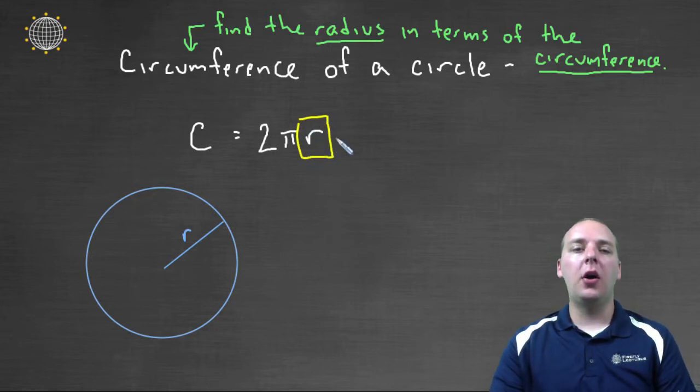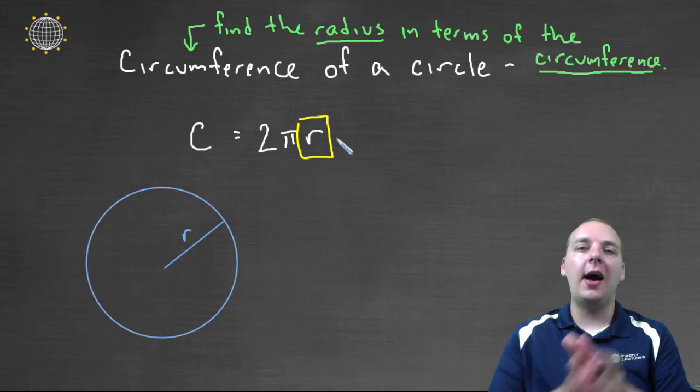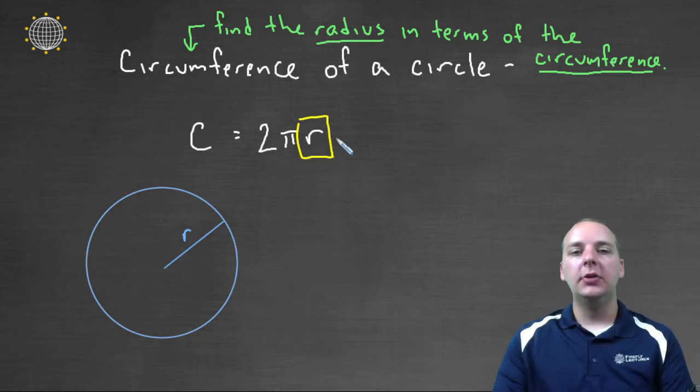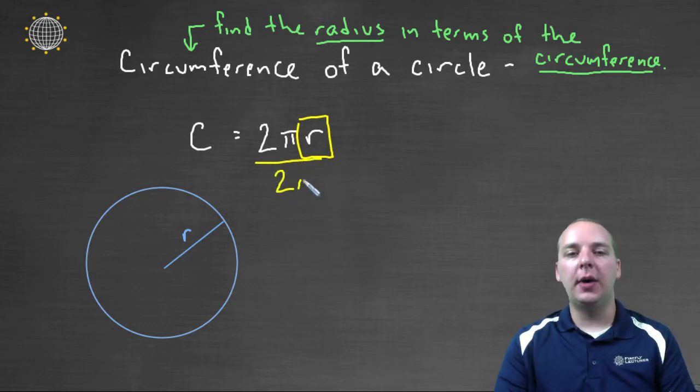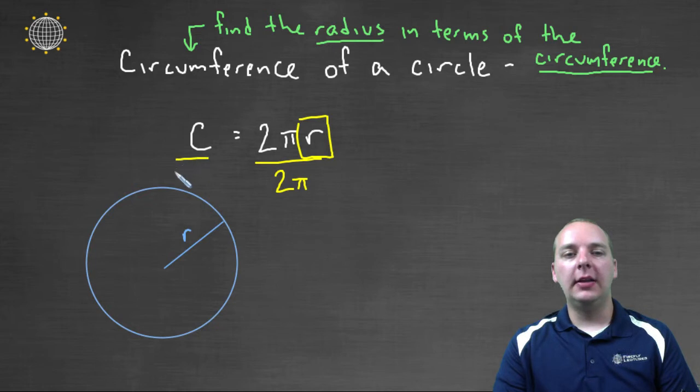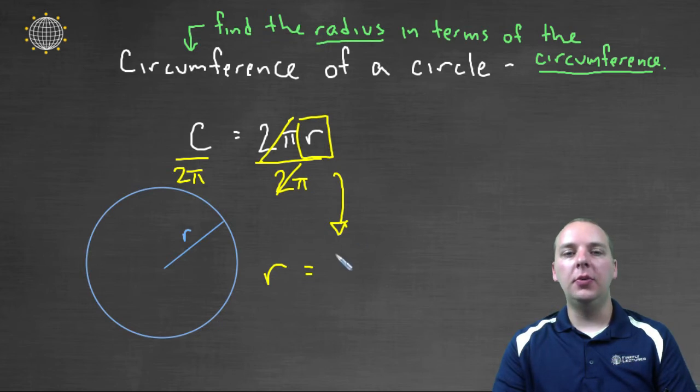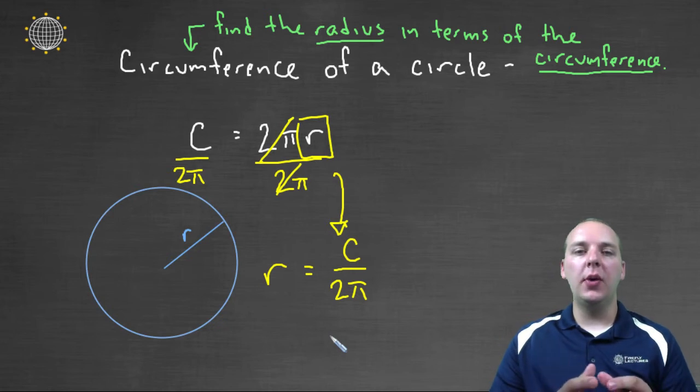So how would I solve for R? Well, currently R is times two pi. So if you wanted to get the R by itself, we would do the opposite of that, and divide by two pi. So if we divided the left side and the right side by two pi, then this would lead to the equation, once the two pi's cancel, R, just an R, equals C divided by two pi.